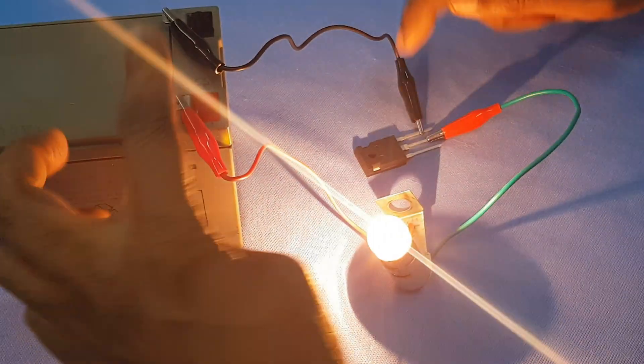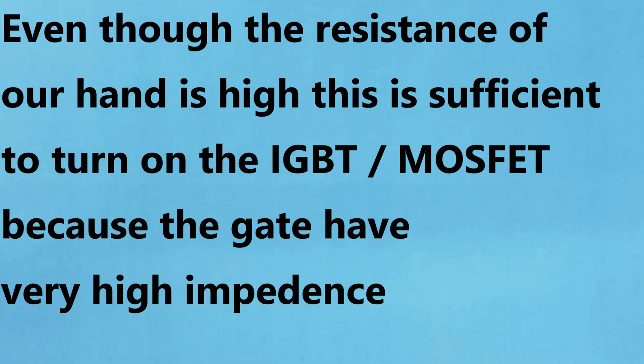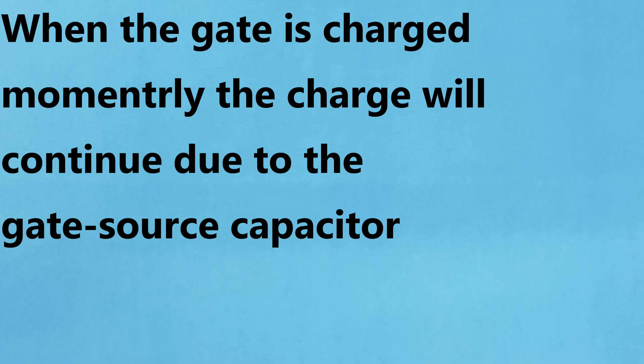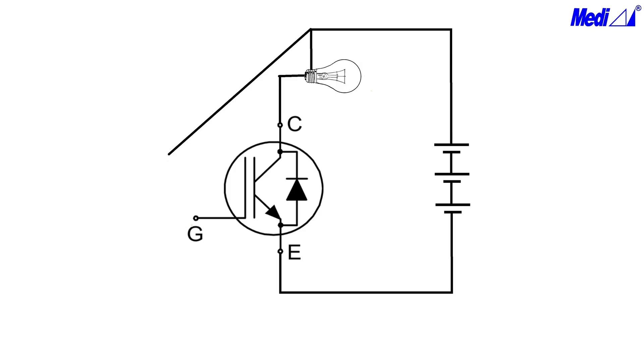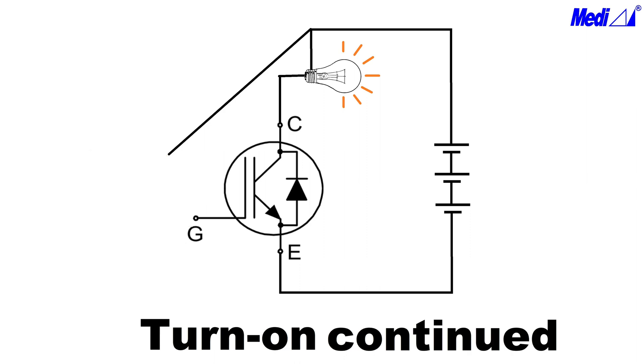Even though the resistance of our hand is high, this is sufficient to turn on the IGBT or MOSFET because the gate has very high impedance. When the gate is charged momentarily, the charge will continue due to the gate source capacitor.